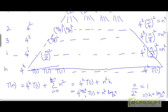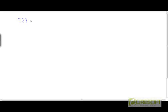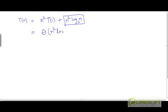Now, 4^(log₂ n) equals n^(log₂ 4) — we can swap n and 4, and the value remains unaffected. And n^(log₂ 4) is nothing but n². So this becomes n² × T(1) + n² × log₂(n). Therefore T(n) = n²·T(1) + n²·log n. The dominant term is n²·log n, so we can say that T(n) is Θ(n² log n).